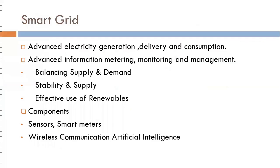Now we discuss the smart grid. It involves advanced electricity generation, delivery and consumption, advanced information metering, monitoring and management. It includes balancing supply and demand, stability of supply, and effective use of renewables. The components used include sensors, smart meters, wireless communication, and artificial intelligence.